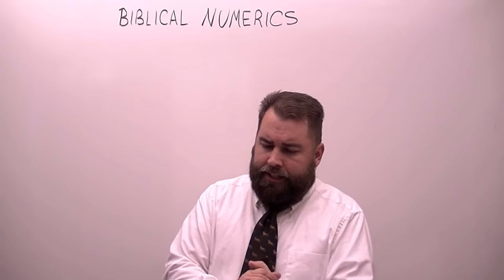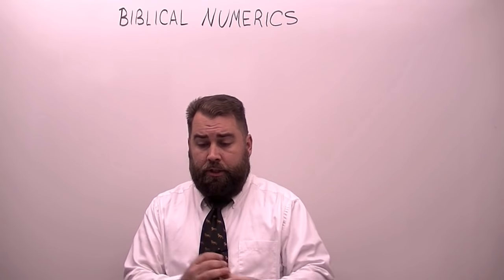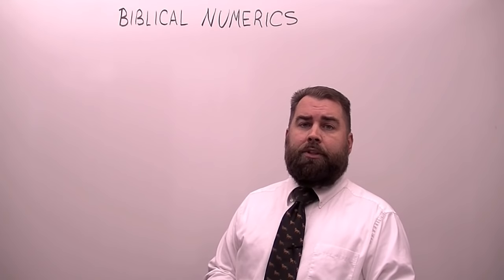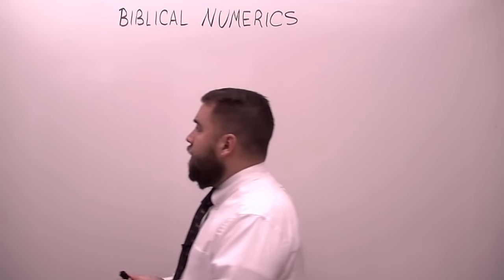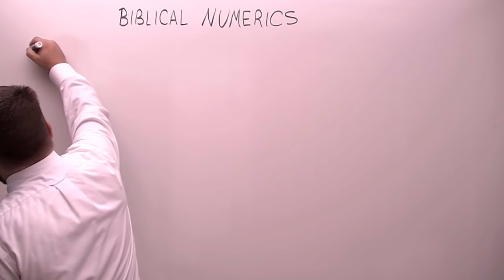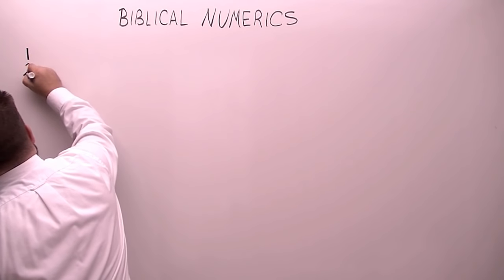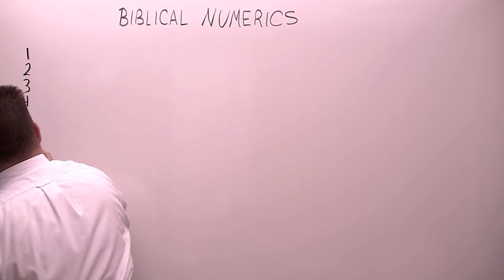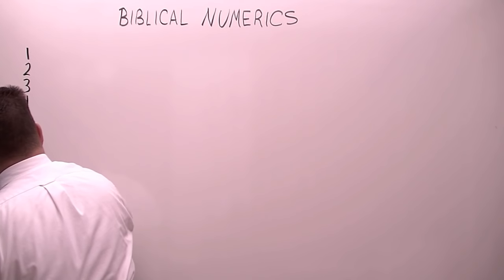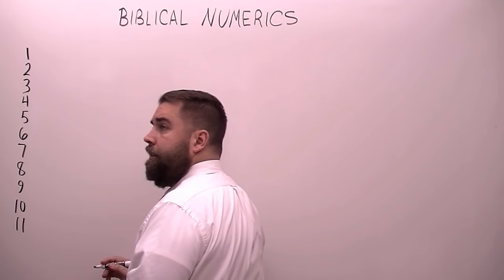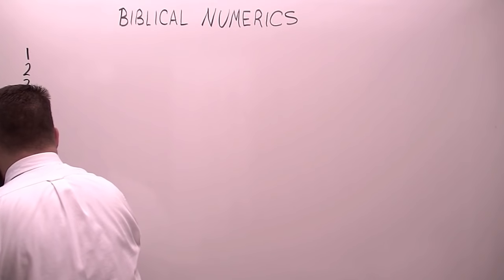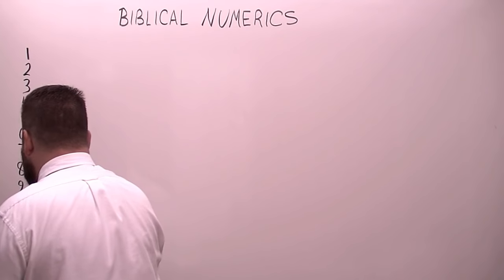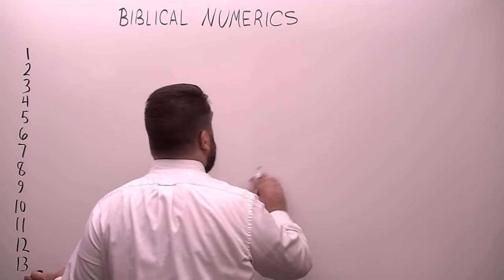What I want to do today is teach on scriptural numerics or biblical numerics — we're going to look at different numbers and what they mean. I'm going to write up here: one, two, three, four, five, six, seven, eight, nine, ten, eleven, twelve, and thirteen. And over here I might put 40 or some other numbers, but that's about as far as I'm going to go — number 13.